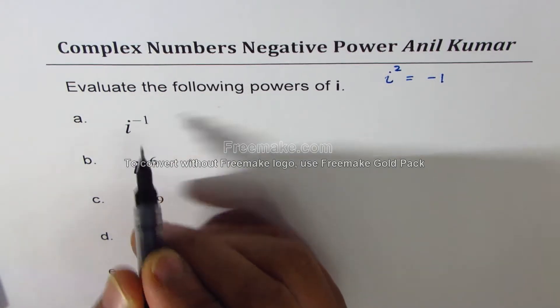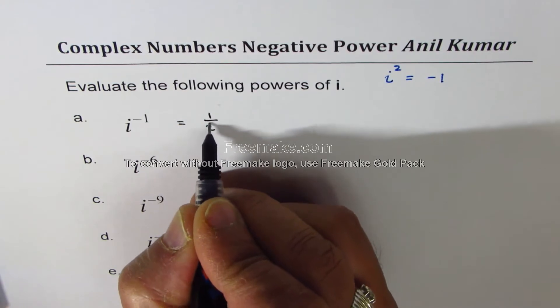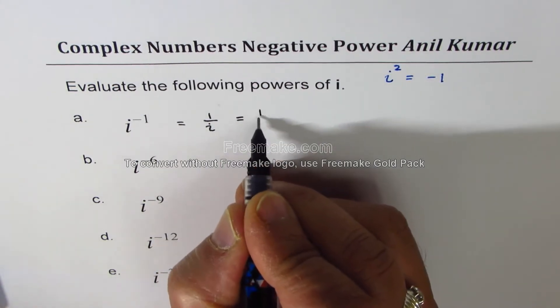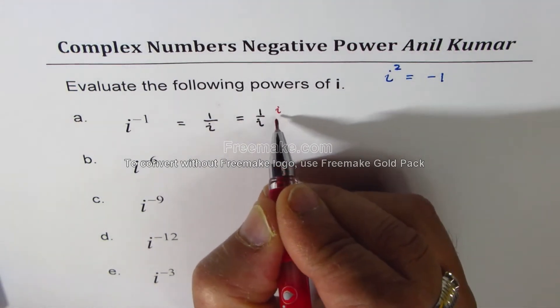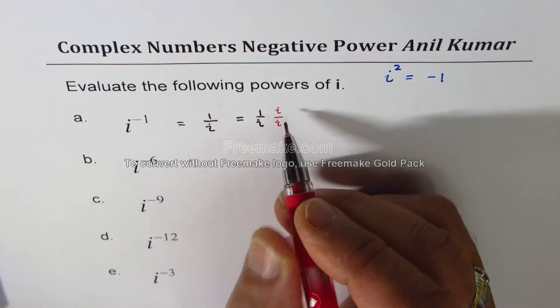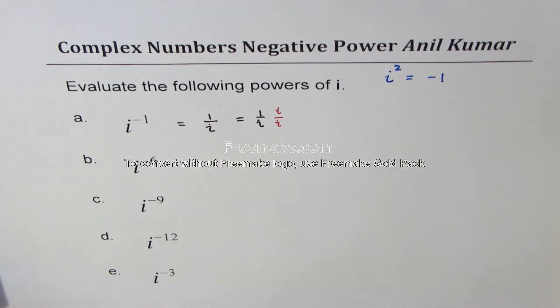When I say i to the power of minus 1, it means 1 over i, correct? So if I have 1 over i, I should rationalize it, that is multiply and divide by its conjugate. Now in this case, multiply and divide by i itself.